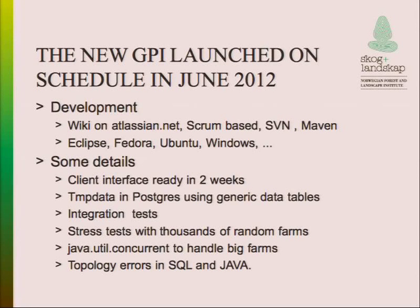We used temporary data in PostgreSQL with generic data tables. Since we were storing data that looked similar but was different kinds of data, we created one table with metadata rather than ten separate tables. We could have used an in-memory database like MongoDB or Berkeley DB, but we chose PostgreSQL for temporary data because that data needs to be viewed in GeoServer and MapServer later - it's much easier to connect PostgreSQL to those tools.